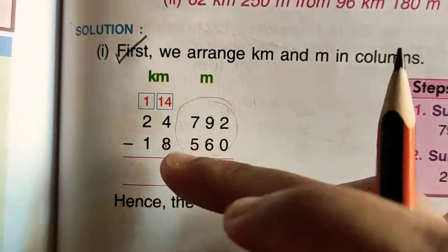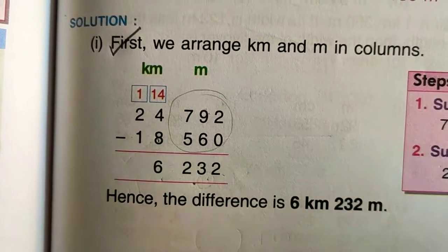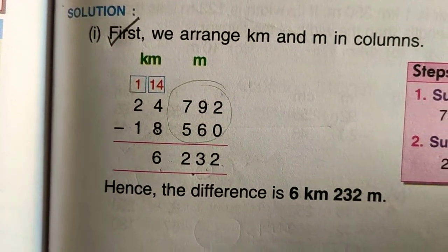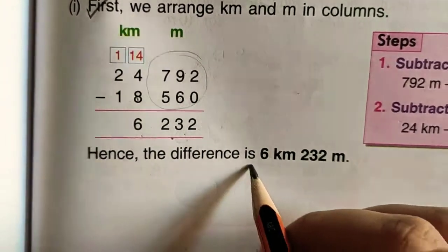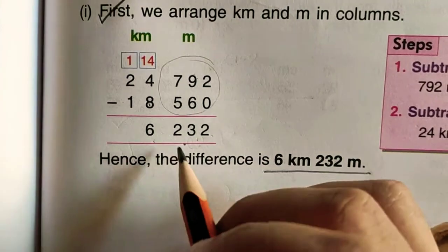Next, 24 minus 18 equals 6. So it will be 6 kilometer 232 meter.